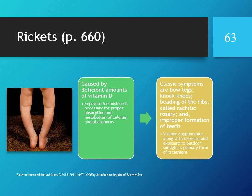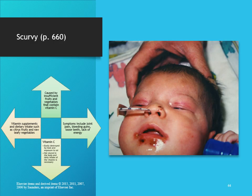Rickets is caused by a deficient amount of vitamin D. Exposure to sunshine is necessary for proper absorption and metabolism of calcium and phosphorus. Classic symptoms are bow legs, knock knees, beading of the ribs called rachitic rosary, and improper formation of the teeth. Treatment is vitamin supplements along with exercise and exposure to outdoor sunlight. Scurvy — the instructor mentions threatening kids who don't eat their vegetables...